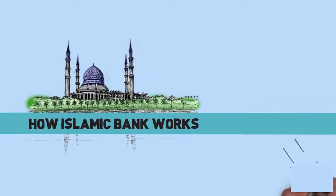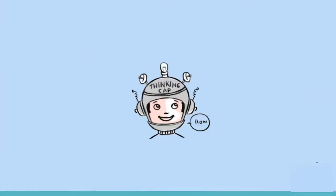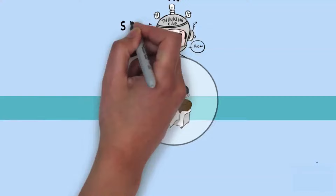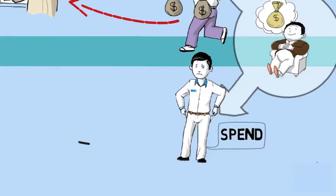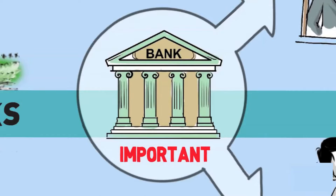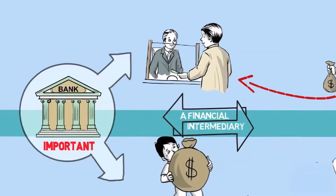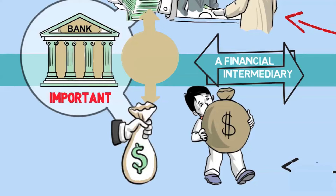Let us understand what is Islamic banking and finance. Before that, we need to have clarity on what is a bank and how a bank works. Let us start with a basic question: what do we do with money? We can either save it or spend it. If you have money and you want to save it, a bank is a good place. If you have no money and you want to spend it, a bank is a good place to get money. In either of the cases, a bank plays an important role. A bank is a financial intermediary that accepts deposits and channels those deposits into lending activities.